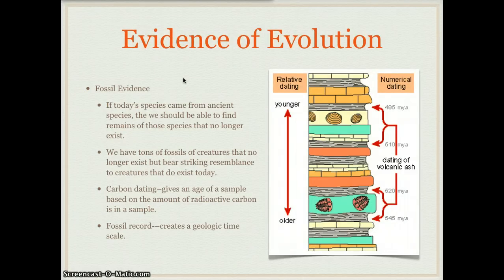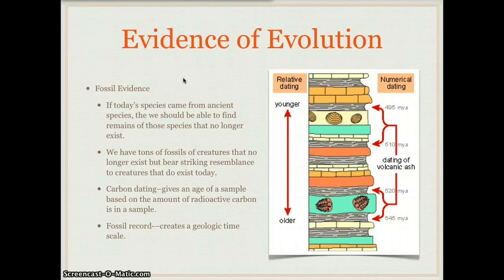Evidence of evolution includes the fossil record. If today's species came from ancient species, then we should be able to find the remains of species that no longer exist. Not all things can be fossilized, so we don't see all the species, but the ones we do see share many common features with today's organisms. To date these species, we use a technique called carbon dating, which gives an age of a sample based on the amount of radioactive carbon in it. The fossil record overall creates a geologic timescale of when these organisms may have been alive.